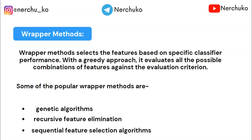We have either a classifier model or a regression model, and we evaluate the model. Wrapper method examples include forward selection, recursive feature elimination, and sequential feature selection algorithms. Basically, we train the model with all possible feature combinations. In forward selection, we train the model starting with the first feature, then add features one by one.